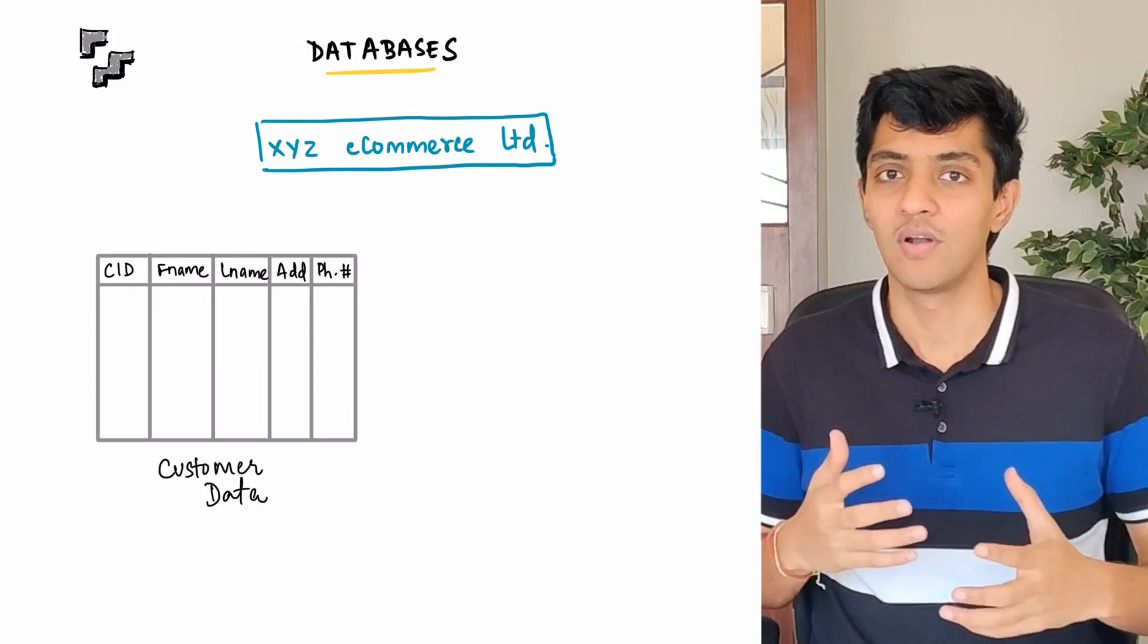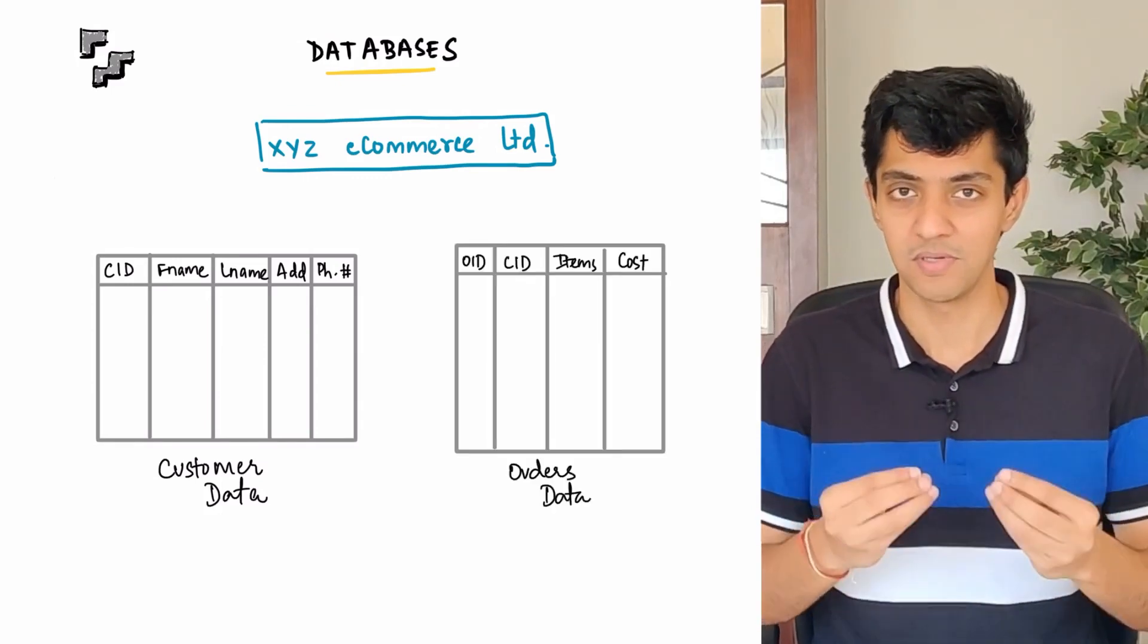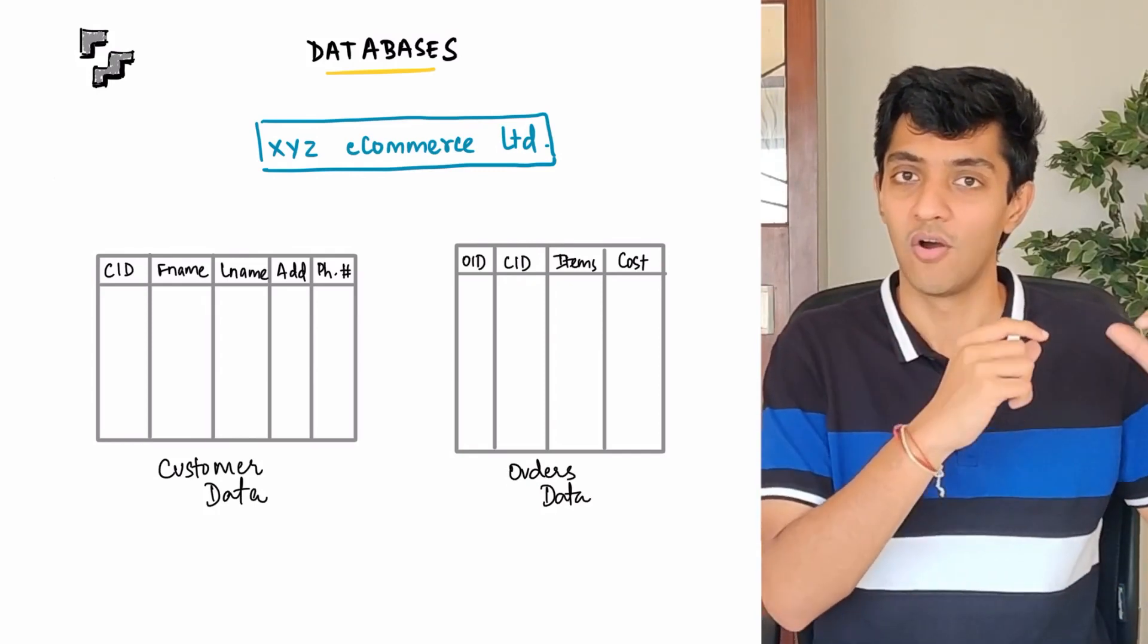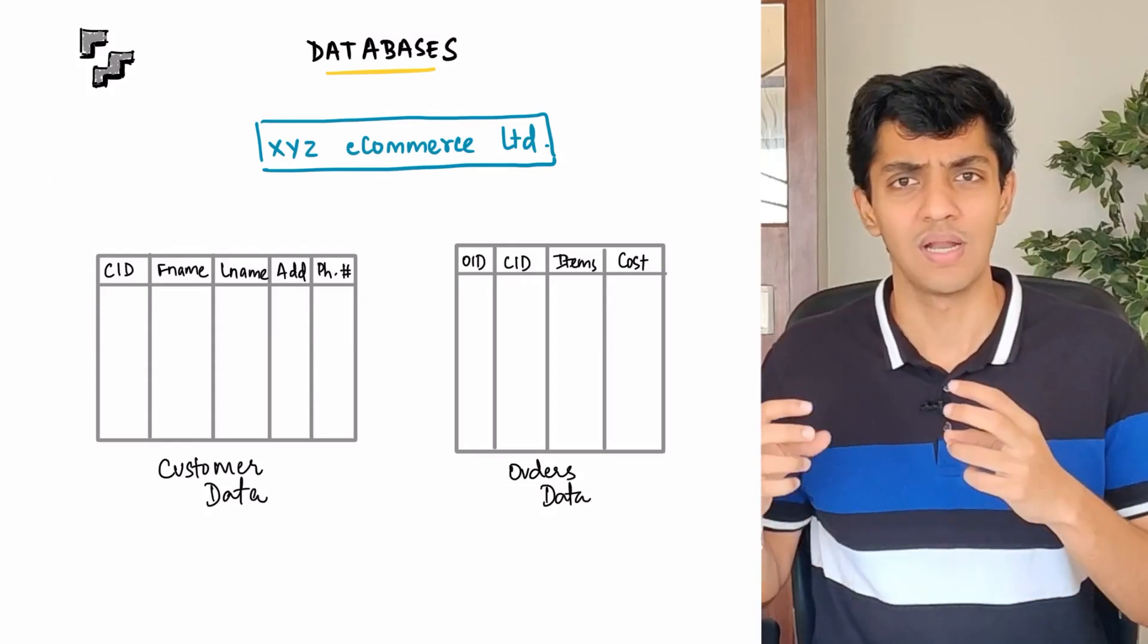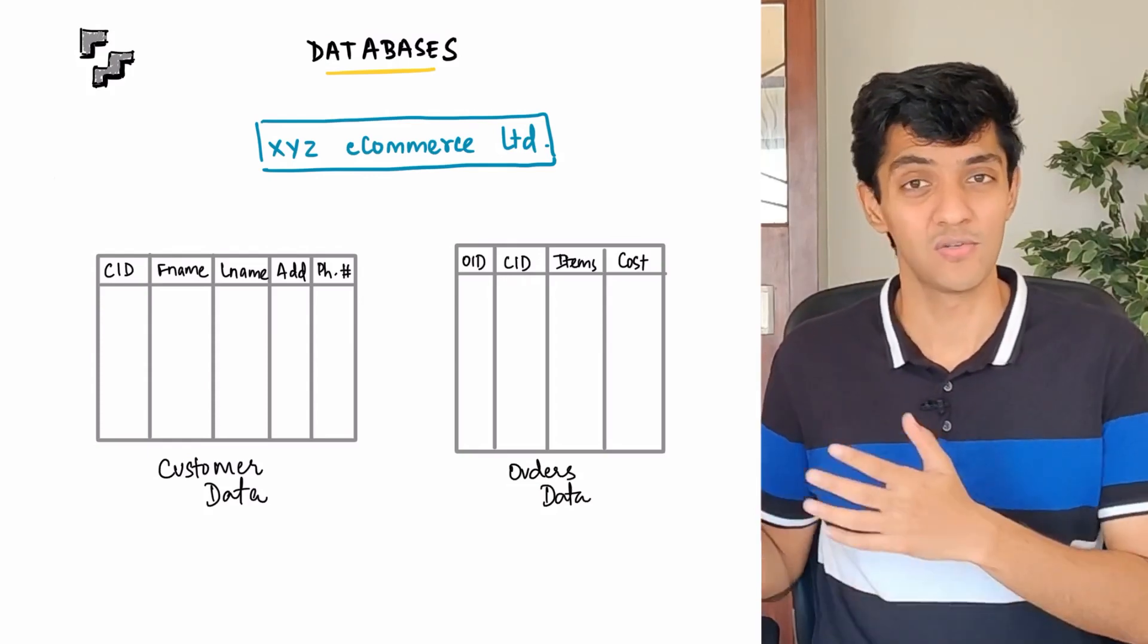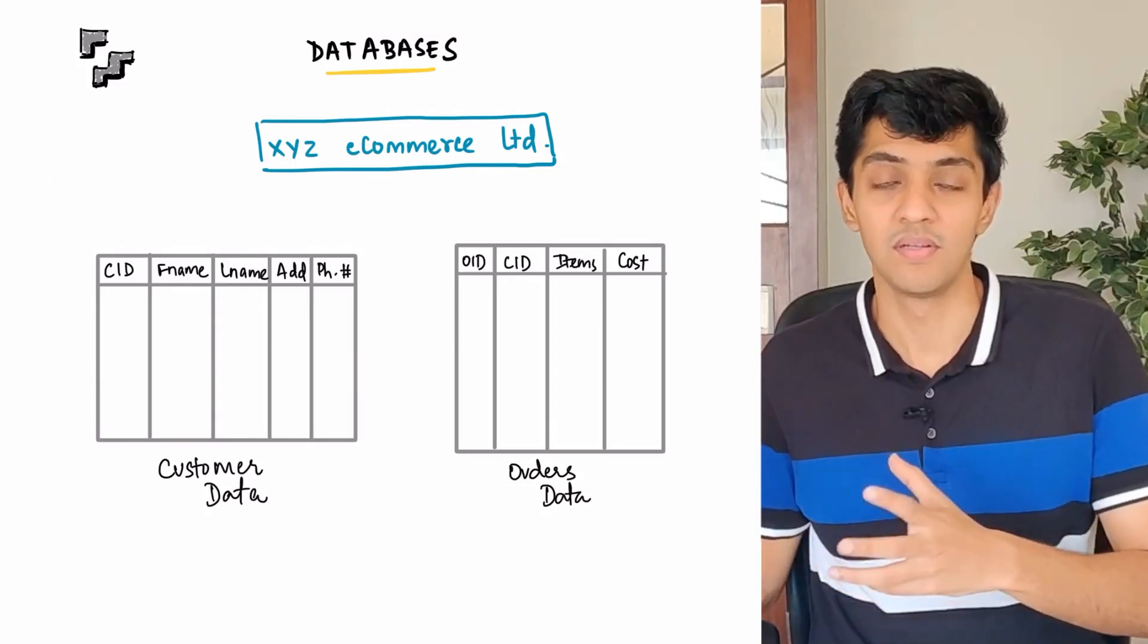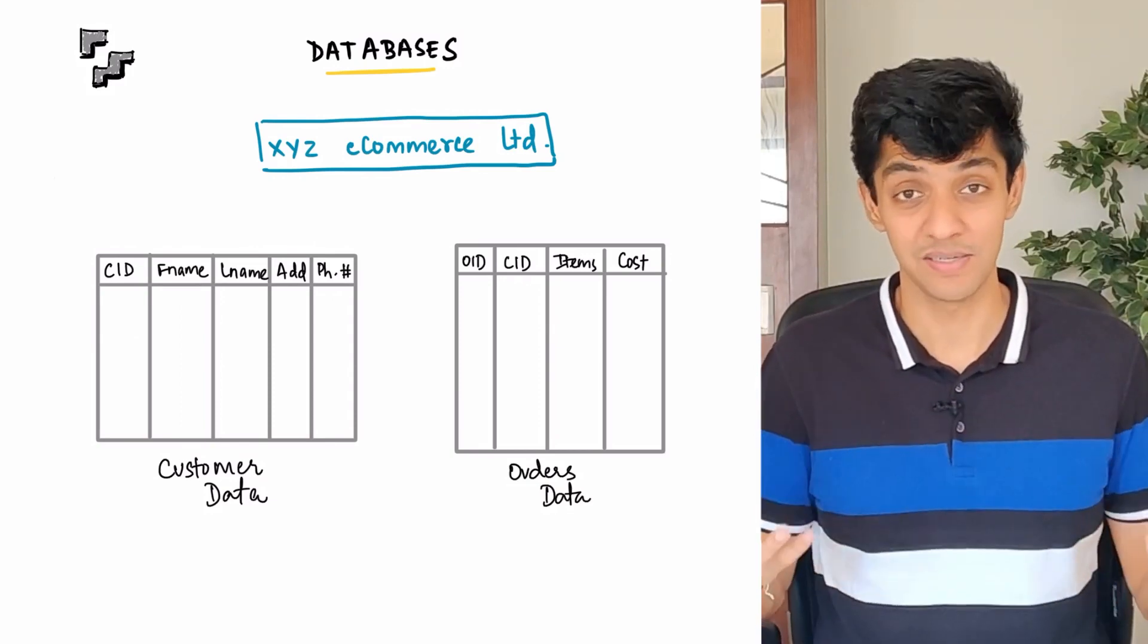Now all of these details would sit inside a particular table. Now you'd also want to store what is called the order information. Order information as in order ID or the order number, the customer ID, which is the customer who's actually purchased this particular order or placed this particular order. Then you would have some information around what are the total items in that particular order and then finally the total cost of that order. So now in order for you to store this information, you would again need a table. Now all of these tables put together is essentially what you call a database.